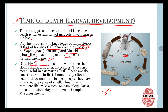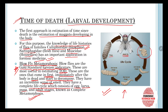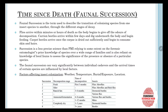We are going to study blow fly metamorphosis. Blow flies are the golden standard for forensic indicators and are most useful in estimating time of death. They are the first ones to arrive immediately after the body is dead, because they have an incredible sense of smell. They have a complete life cycle consisting of egg, larva, pupa, and adult stage — known as complete metamorphosis. The entire life cycle details, including stage durations and larval length at particular stages, have been discussed in the Part 1 video of forensic entomology.